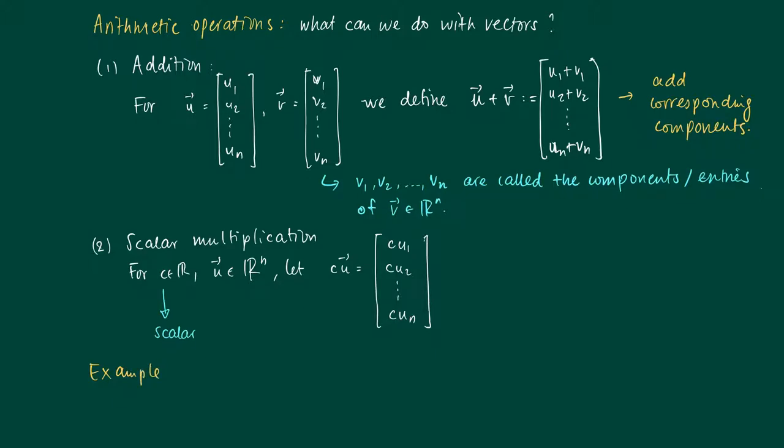For example, we may now subtract vectors from each other. u minus v is by definition u plus minus 1 times v, so we have a sum and we have a scalar multiplication by minus 1.